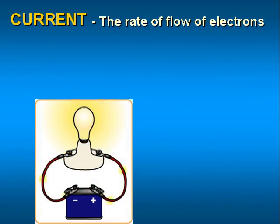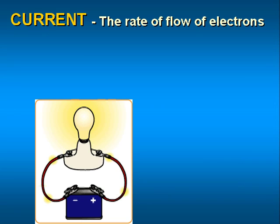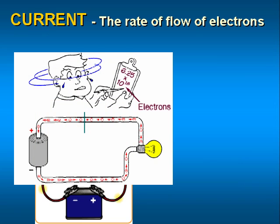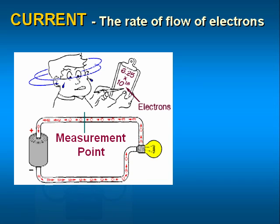Current is the rate of flow of electrons in a circuit. Current is moving electrons. Since the electron represents an extremely small charge, a more useful unit for charge has been defined. It is the Coulomb. One Coulomb equals the charge of 6.25 times 10 to the 18 electrons. One ampere has been defined as the rate of flow of one Coulomb per second.